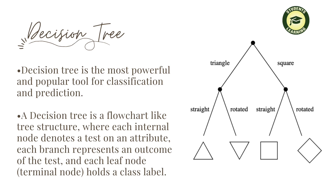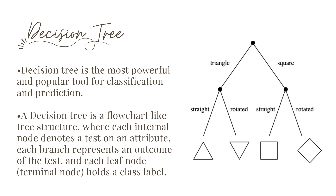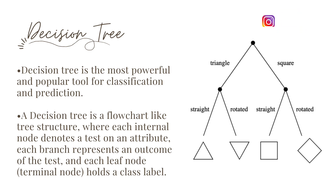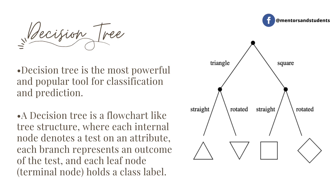Decision tree is the backbone of random forest. It is the most powerful and popular tool for classification and regression prediction in machine learning. A decision tree is a flowchart-like tree structure where each internal node denotes a test of an attribute, each branch represents the outcome of the test, and each leaf node holds a class label.